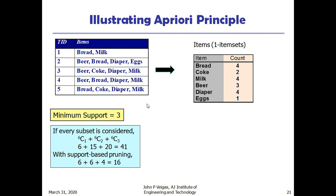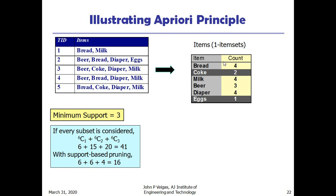Now let us illustrate the Apriori principle. Given a transaction set with five transactions and the items purchased shown in the table, we have generated the one item sets: Bread, Coke, Milk, Beer, Diaper, Eggs. Minimum support is equal to three. Bread appears in four transactions, Coke in two, Milk in four, Beer in three. We eliminate items not meeting minimum support: Coke (support 2) and Eggs (support 1) are removed.